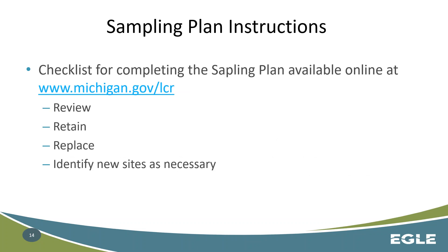We have instructions in the plan, also available online at michigan.gov/LCR. There's a checklist to go along with this as well, with the main purpose being to review your current sites, retain those sites if they still apply and represent your highest risk based on the updated tiering criteria, replace any of those sites as necessary, and identify new appropriately tiered sites if you need them to get up to that standard number of samples.